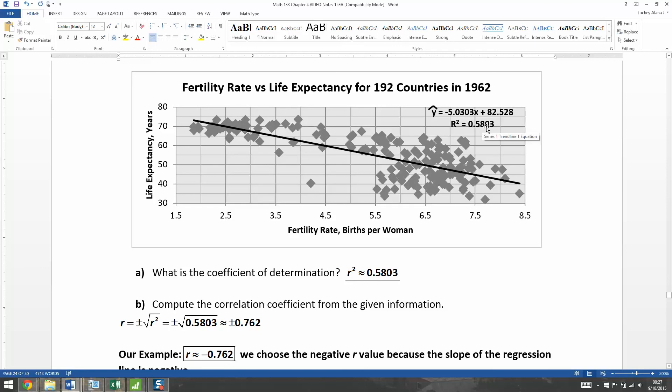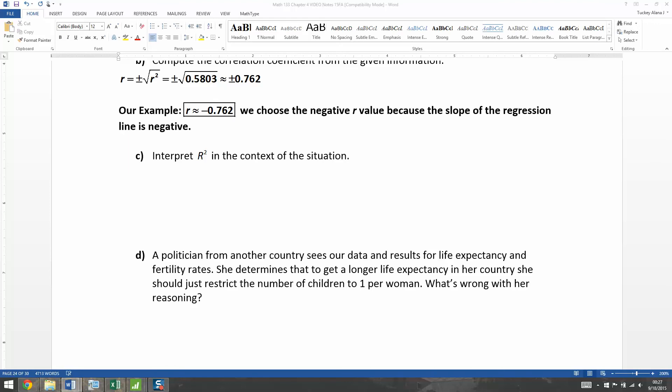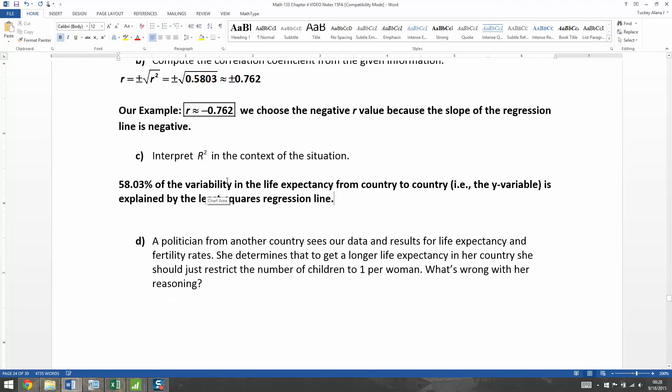All right, now let's get another practice in of interpretation. So 58%, 58.03% to be precise, of the variability that we see in life expectancy. So why are some points higher than others, right? Why does that happen? Why do some countries have more life expectancy than what we would expect and less life expectancy than what we would expect? That variability, 58% of it can be explained by the least squares regression line. By the same token, that means around 42% can't be explained by the regression line. We're not sure why it's happening.